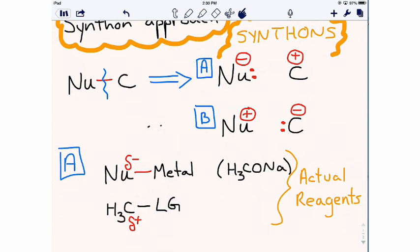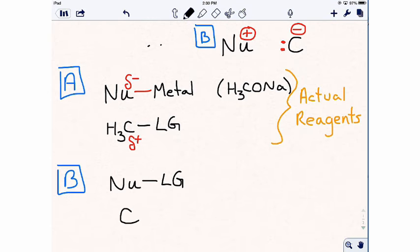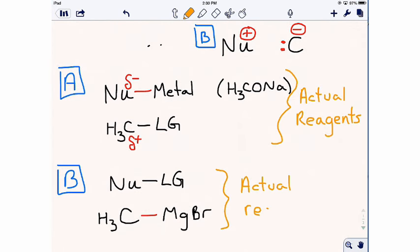For synthon pair B, the nucleophile might have been bound to a leaving group, making it delta positive, and the CH3 might have been bound to magnesium bromide, making a Grignard reagent.